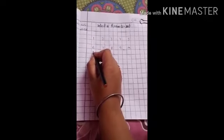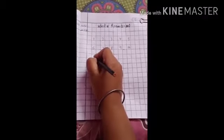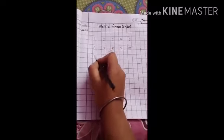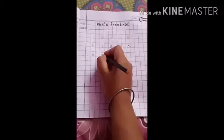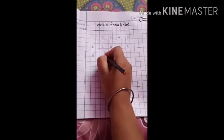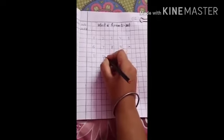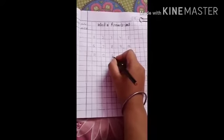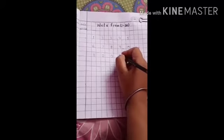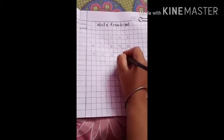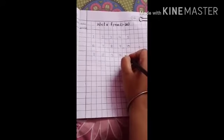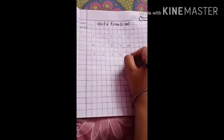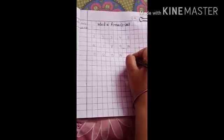Now, again come down, leave one box and start from here. 1, 1, 11. What's come after 11? Yes, leave one box and write 1, 2, 12. What's come after 12? 1, 3, 13. What's come after 13? Yes, very good. 1, 4, 14. What's come after 14? 1, 5, 15. Very good.